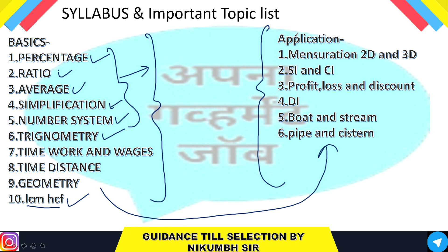In the application section, we have mensuration 2D and 3D, simple interest, compound interest, profit and loss, and discount. The most important and game-changer topic for AAI 2020 will be data interpretation, where you have to focus on percentage, ratio, ages, and average. Next are boats and streams, and pipes and cisterns.